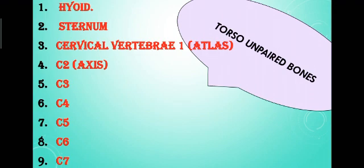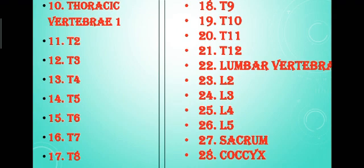Total number of thoracic vertebrae are 12, that are T1, T2, and so on till T12.